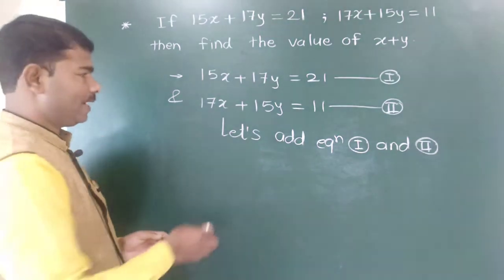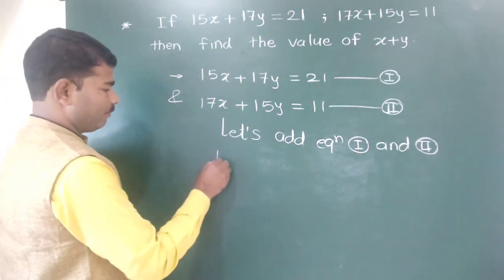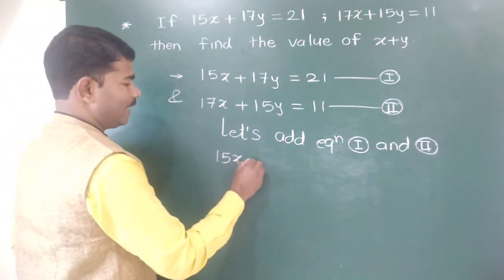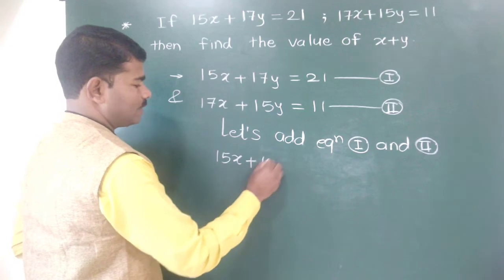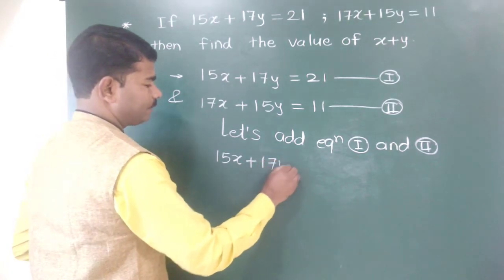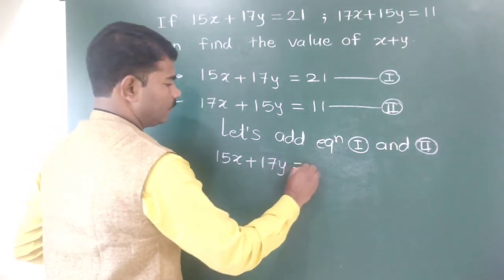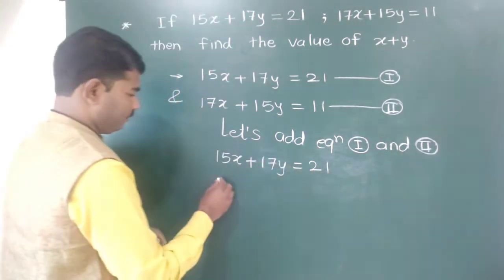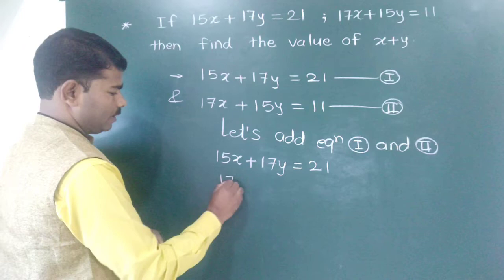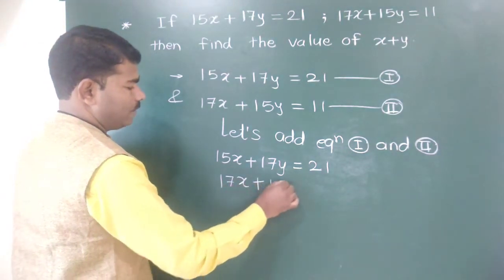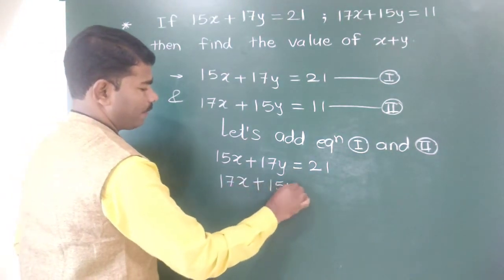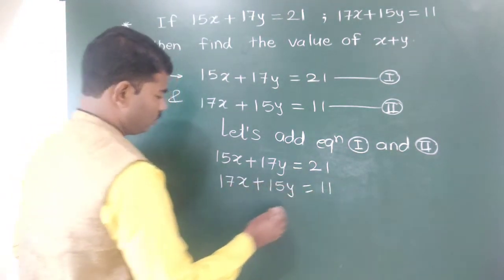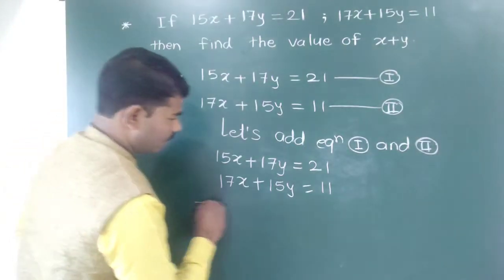We can add these two equations. Addition: 15x plus 17y is equal to 21, and 17x plus 15y is equal to 11.